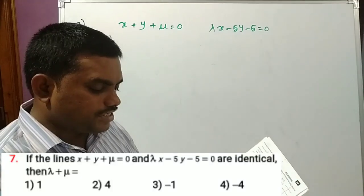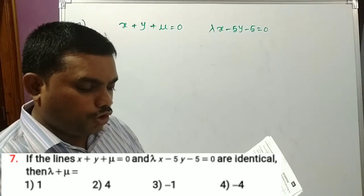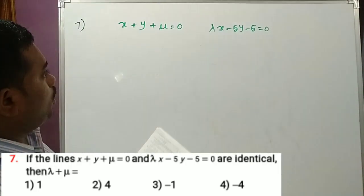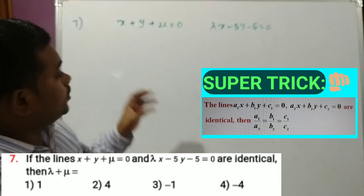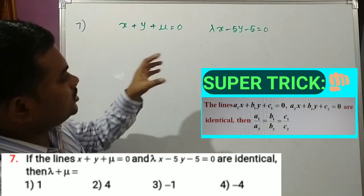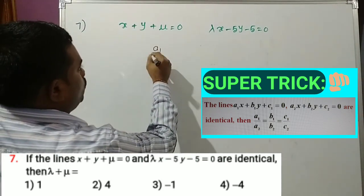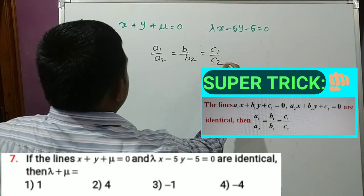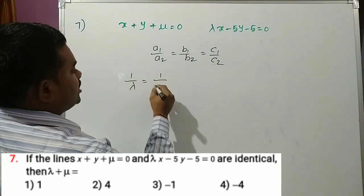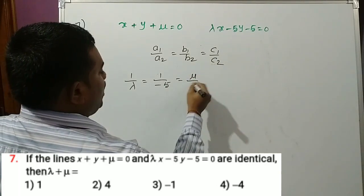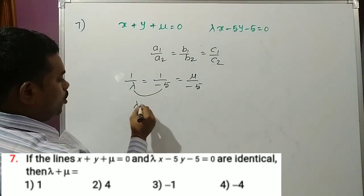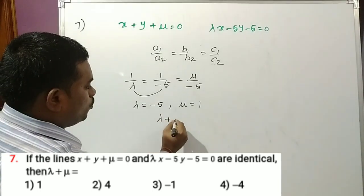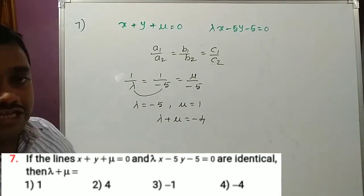Question 7: If the lines x plus y plus mu equals 0 and lambda·x minus 5y minus 5 equals 0 are identical, find lambda plus mu. Identical lines have coefficients in proportion: a1/a2 equals b1/b2 equals c1/c2. So 1/lambda equals 1/(minus 5) equals mu/(minus 5). Taking the first two: lambda equals minus 5. Taking the last two: mu equals 1. Therefore lambda plus mu equals minus 4. Option 4 is the correct answer.